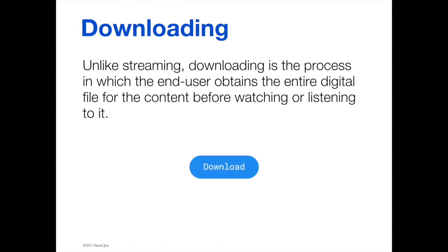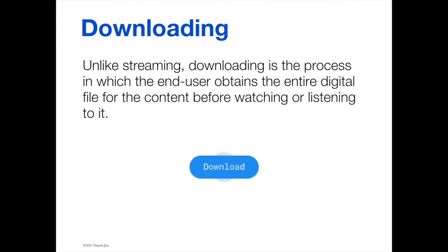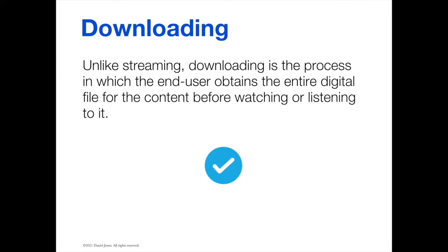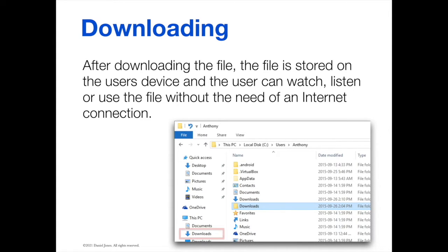Downloading. Unlike streaming, downloading is the process in which the end user obtains the entire digital file for the content before watching or listening to it. Streaming requires that you have a constant connection to the internet while you watch that video. With downloading, you're actually taking the file — that video file, that audio file — and making a copy of it on your computer or on your television. That allows you to watch the content at any time without the need of an internet connection. After downloading the file, it is physically stored on the user's device in your Downloads folder.